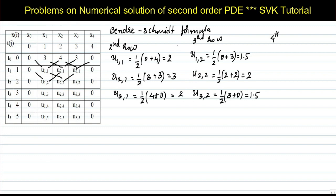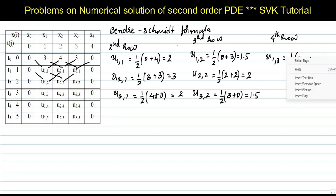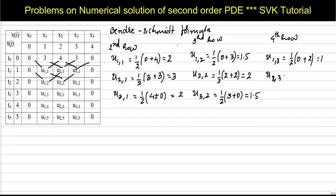For the fourth row: u(1,3) = (1/2)(0 + u(2,2)) = (1/2)(0 + 2) = 1. u(2,3) = (1/2)(u(1,2) + u(3,2)) = (1/2)(1.5 + 1.5) = 1.5. u(3,3) = (1/2)(u(2,2) + 0) = (1/2)(2 + 0) = 1.